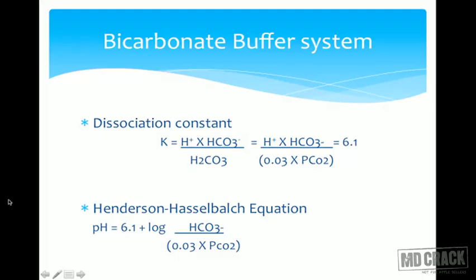The next important concept is the Henderson-Hasselbalch equation. If we know the dissociation constant, bicarbonate ion concentration, and CO2 concentration, we can calculate the pH. The equation is: pH = 6.1 + log([HCO3-] / (0.03 × pCO2)). If bicarbonate is added, pH increases causing alkalosis; if CO2 is added, pH decreases toward acidity.